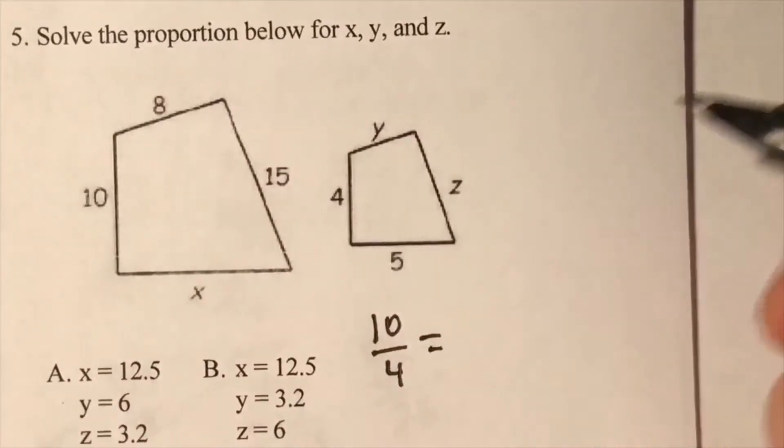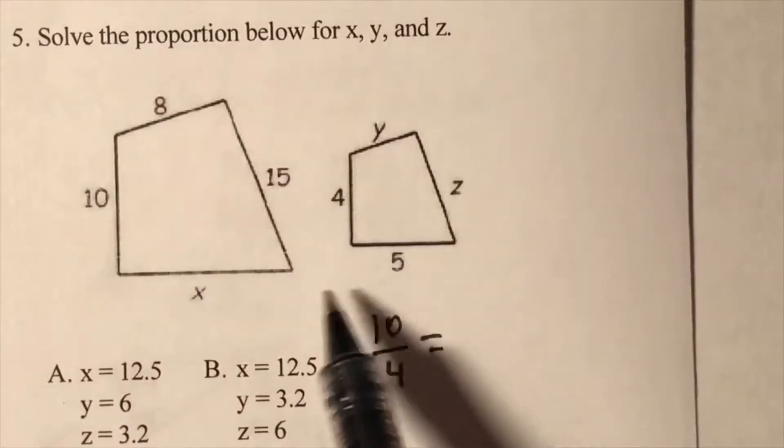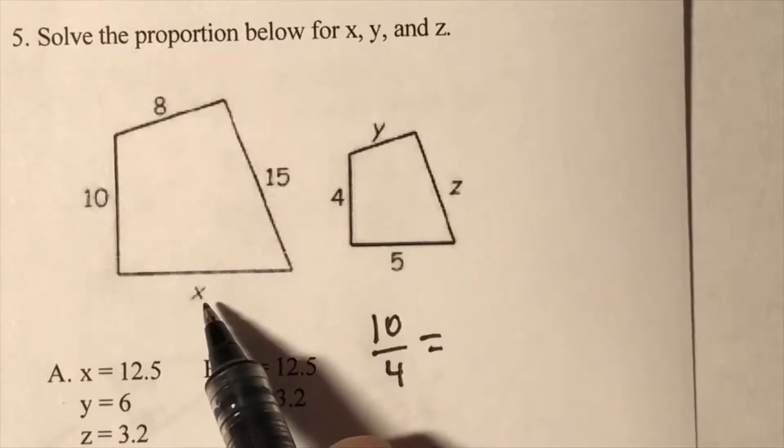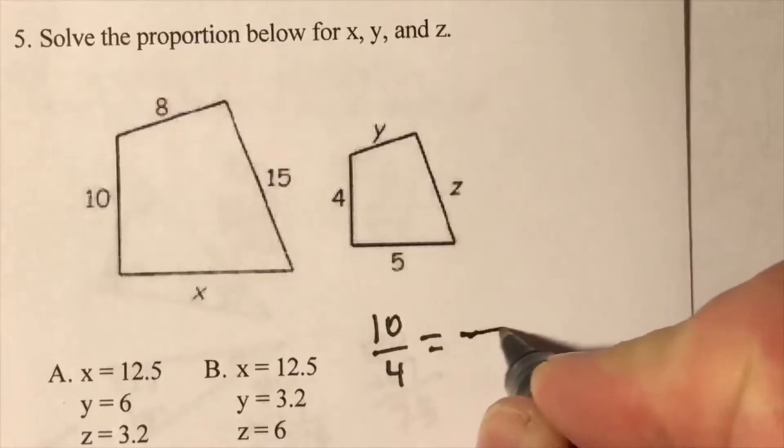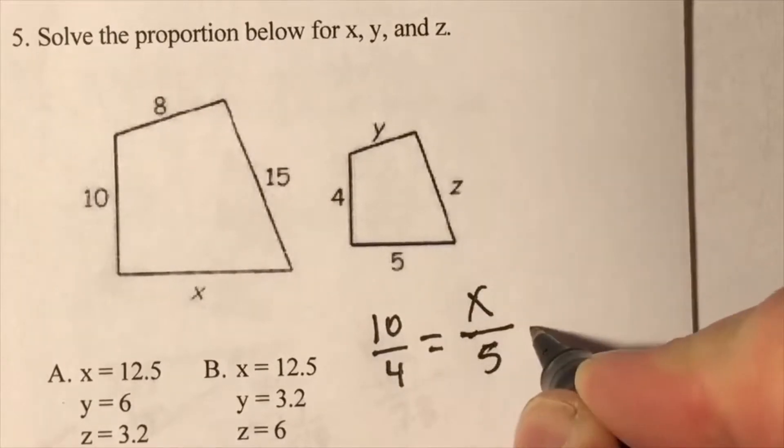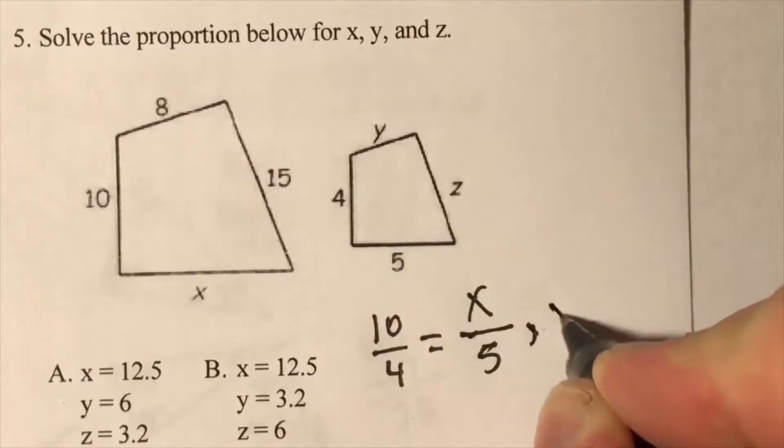Keep that same pattern going and now I can solve for x. I want to put this on top, so I'll put x over 5, and then x equals 12.5.